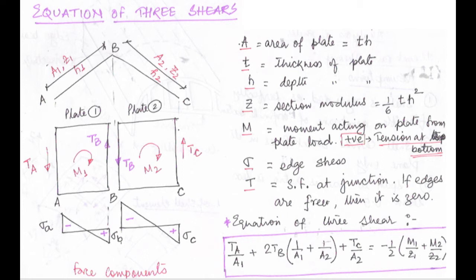Let us see the meaning of these notations. A stands for the area of the plate: area equals T times H, where T is the thickness and H is the depth of the plate. So A1 and A2 are the areas of plates AB and BC respectively. Z is the section modulus, with formula (1/6)TH². So for AB it is Z1, and for BC it is Z2.